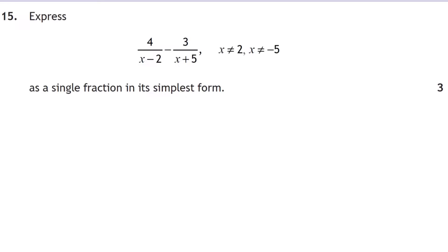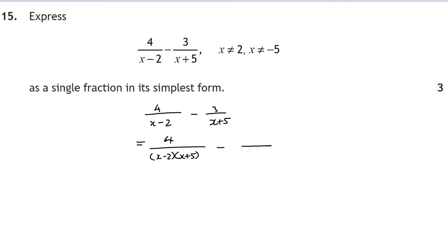Question fifteen: algebraic fractions — 4/(x−2) minus 3/(x+5). As with all fraction addition or subtraction, we need a common denominator: (x−2)(x+5). For the first fraction, multiply top and bottom by (x+5); for the second, multiply by (x−2).